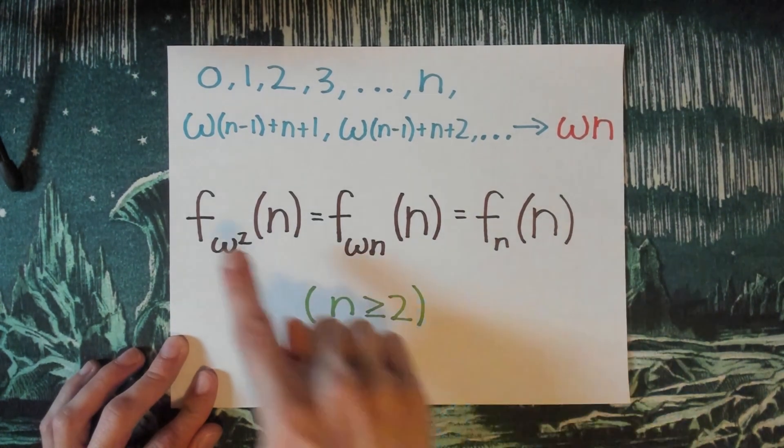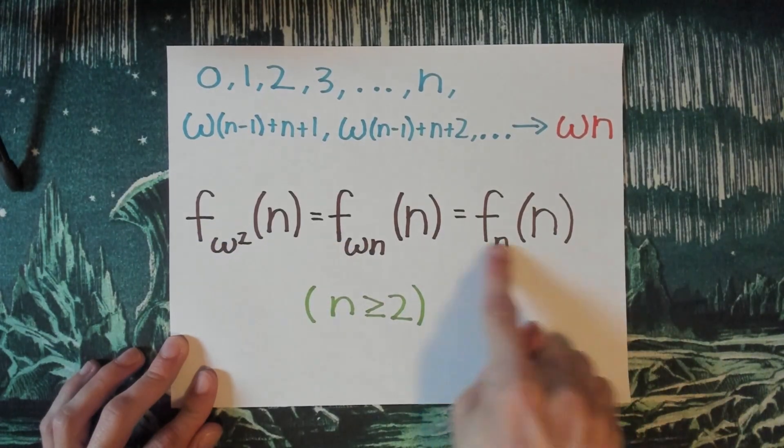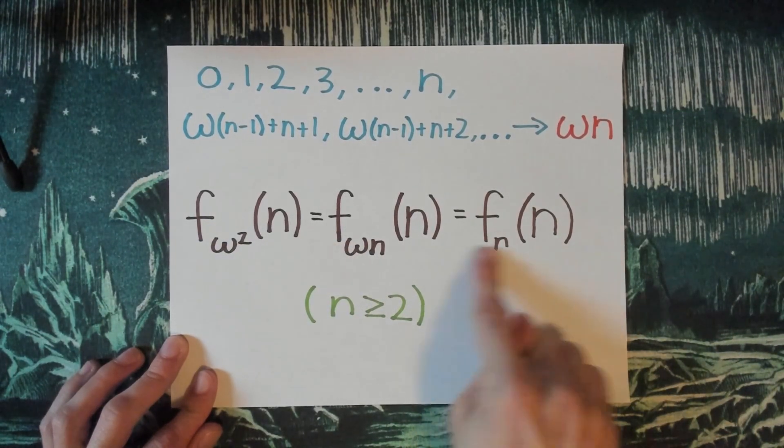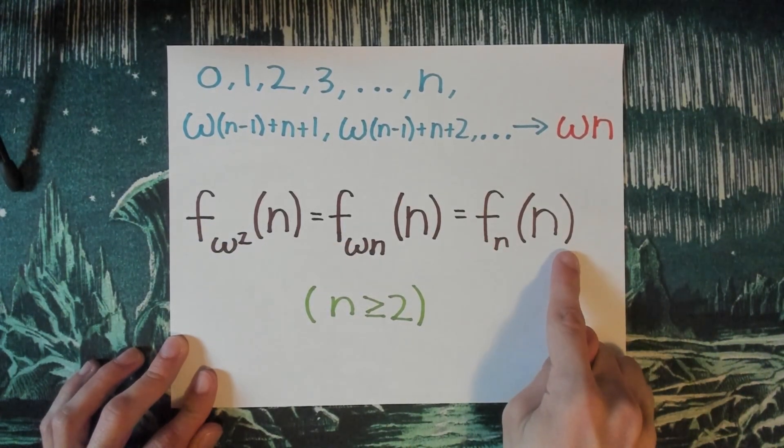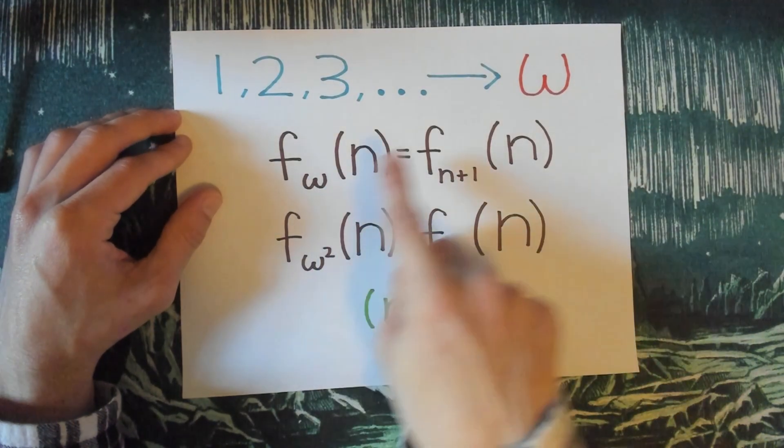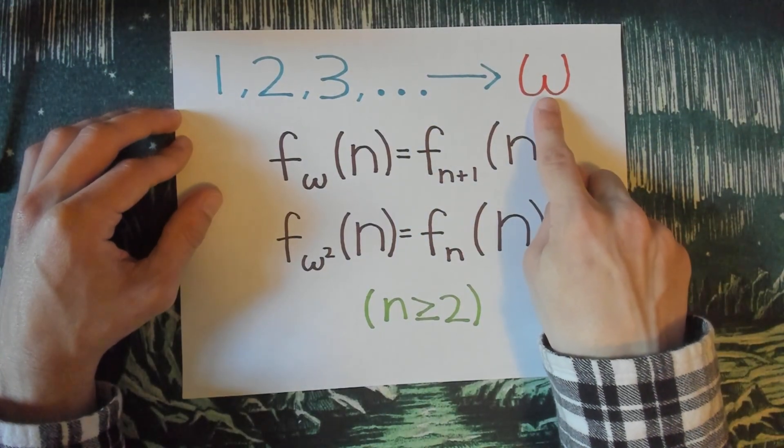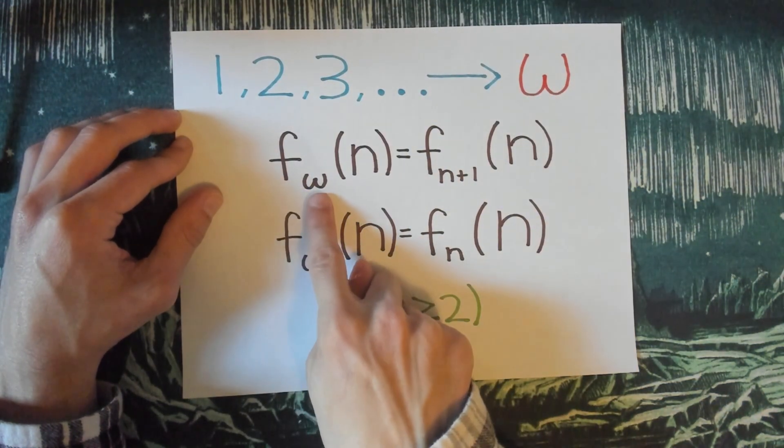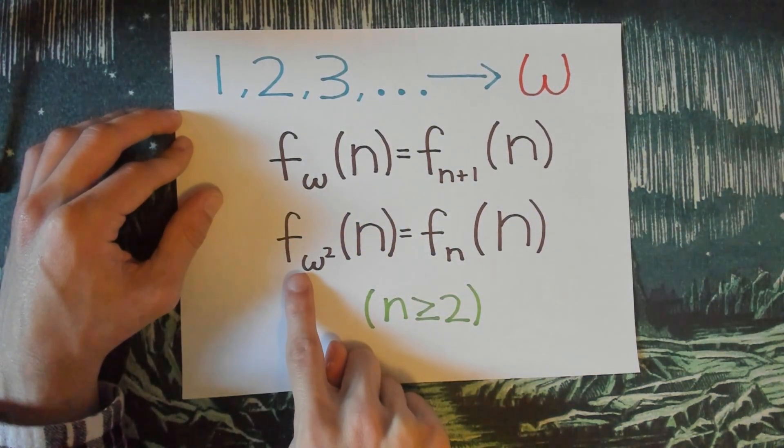Which, hey, the f omega squared, it's really not growing as fast as you might expect it to because of these weird fundamental sequences that we've chosen. All right, now we just want to choose a fundamental sequence for omega that makes f omega grow faster than f omega squared.